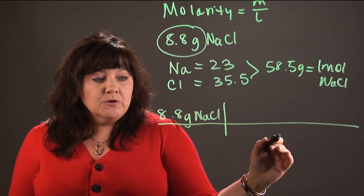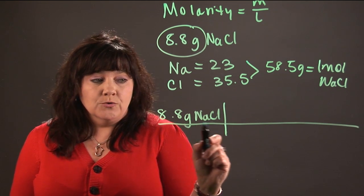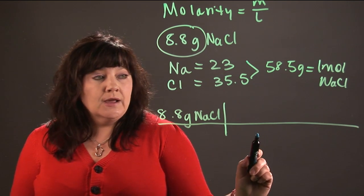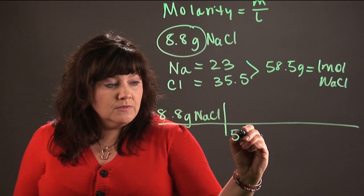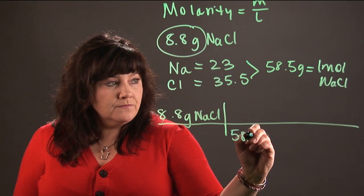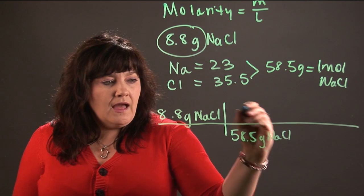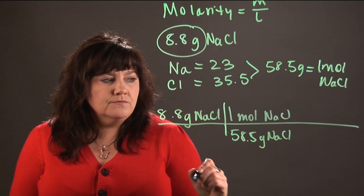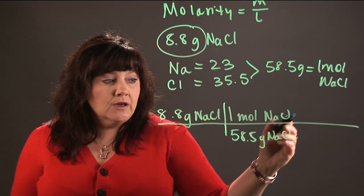But when I set up these problems, I want to be able to cancel out units. So if I have grams of salt on the top up here, I'm going to need to have grams of salt on the bottom down there. So I'm going to say 58.5 grams and put that on the bottom, and that equals one mole of salt.